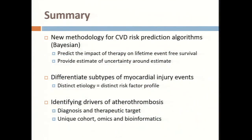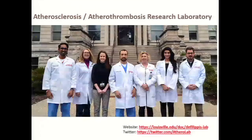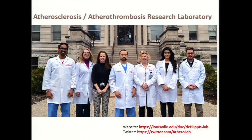In summary, we're working toward new methodology for risk prediction in two ways: changing the statistics to predict impact of therapy on lifetime event-free survival and providing estimates of uncertainty around risk estimates. We think it's very important that there are different subtypes of myocardial injury with distinct pathology, likely distinct risk profiles, and certainly distinct therapeutic profiles — so we need to accurately diagnose these subtypes. Finally, we're working to identify the drivers of atherothrombosis, which will have diagnostic and therapeutic implications.